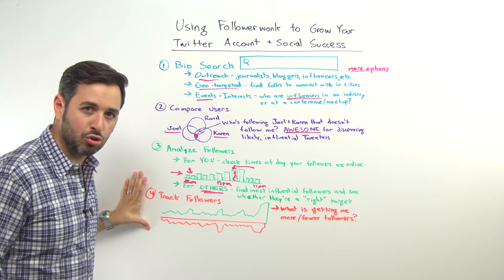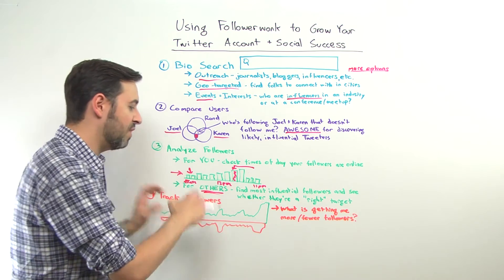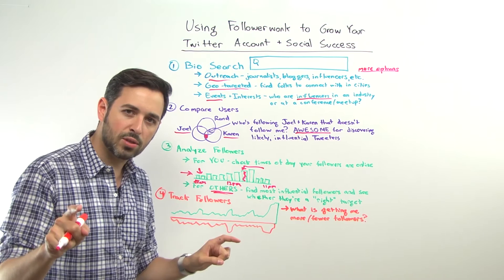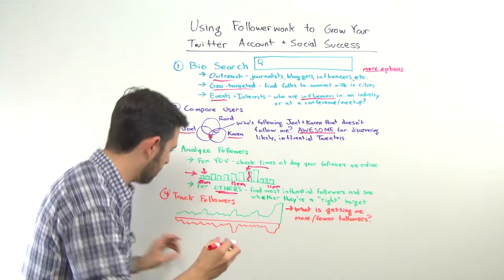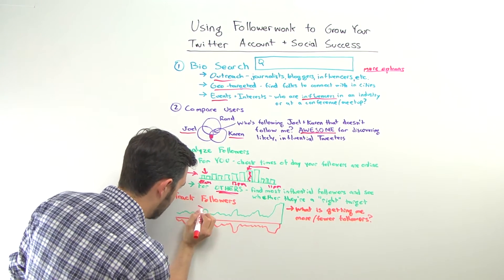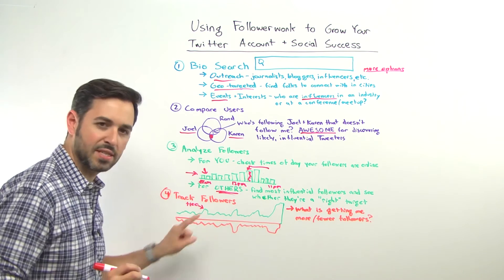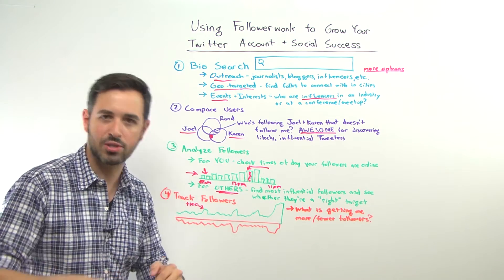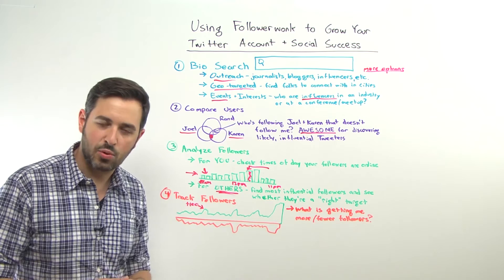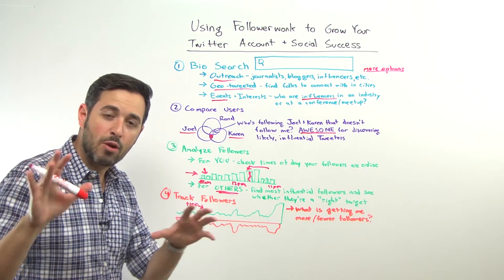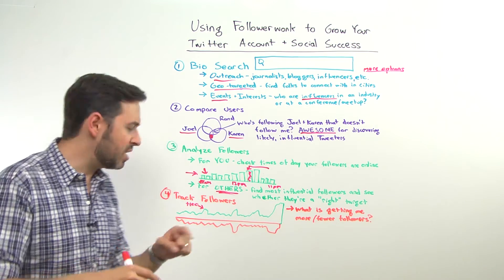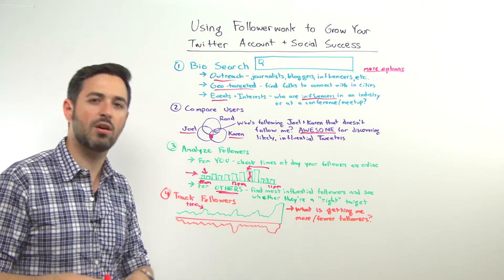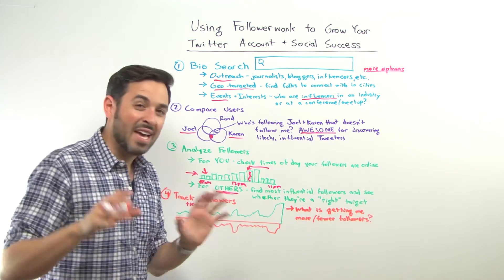Last thing: the track followers feature. My favorite part of this is that it shows me a timeline of new followers and lost followers. So I can see, for example, that I gained plus 100 new followers on a given day. Well, what did I do that day? I can click and see who those followers are, then click over to my Twitter account and see what I was tweeting. This is a great way to see whether you're doing a good job of engaging — is it when you tweet a lot, or tweet a little, or get a lot of retweets, or share a particular link?